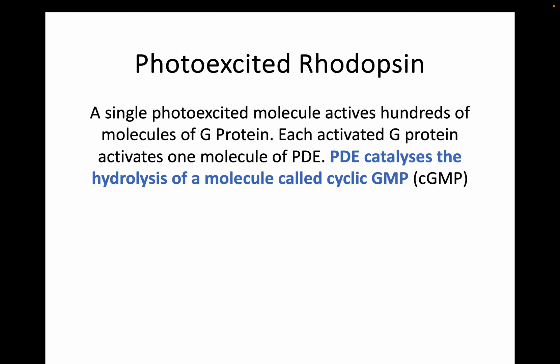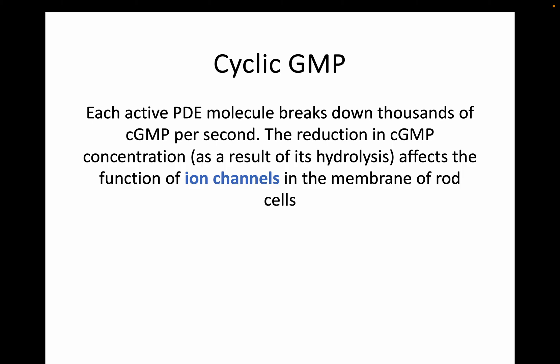That single photoexcited molecule is going to activate hundreds of molecules of G protein — again, that cascade and amplification we mentioned. Each of those G proteins, each of those transducin molecules, is then going to activate one molecule of PDE. That PDE enzyme then catalyses the hydrolysis of a molecule called cyclic GMP, which you'll also see written as cGMP with a lowercase c. That active PDE molecule is then going to break down thousands of cGMP per second. So all of that massive hydrolysis came from just one photon of light stimulating one photoexcited molecule of rhodopsin, which then caused the cascade.